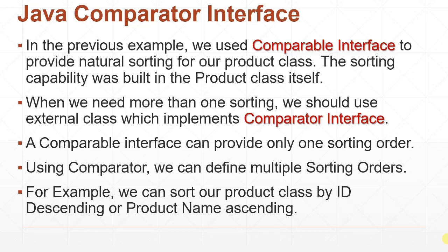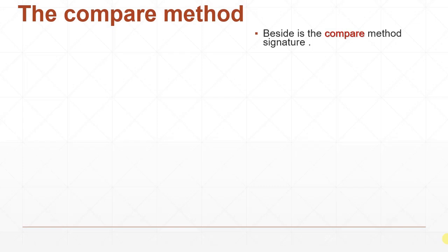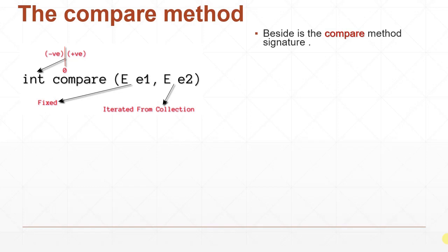The Comparable interface asks you to implement the compareTo method. The Comparator interface asks you to implement the compare method. Conceptually the return value is equal between compareTo and compare: when the method returns 0 both elements are equal, and when it returns positive or negative, elements are sorted accordingly.